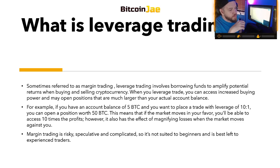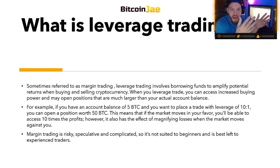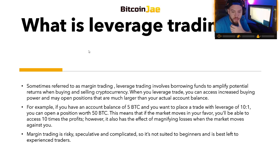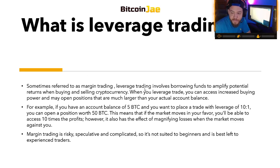Basically, you get to borrow money from the exchange or broker to have more buying power, and you don't have to risk putting up all that money upfront. For example, if you have an account balance of 5 bitcoins and you want to place a trade with leverage of 10 to 1, you can open up a position worth 50 bitcoin. If the market moves in your favor, you'll access 10 times the profits — however, it also magnifies losses when the market moves against you.